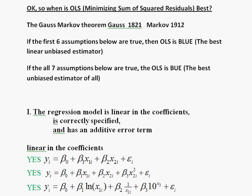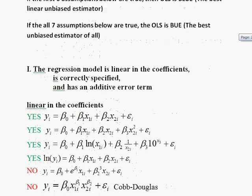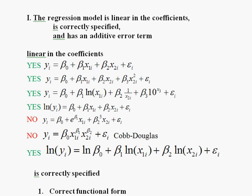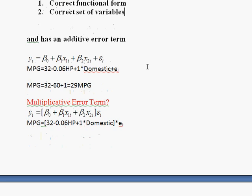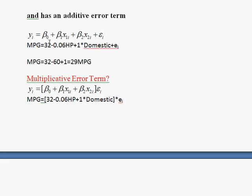Welcome back to our discussion of the Gauss-Markov theorem, when we're trying to figure out when ordinary least squares is the best. We just got done talking about the first assumption of the classical linear regression model: that the regression is linear in the coefficients, is correctly specified, and has an additive error term. We discussed what linear in the coefficients means, that correctly specified says we have the right functional form and the correct set of variables, and that an additive error term means you use the y-intercept and the slopes to come up with a predicted value for an individual — for example, 29 miles per gallon for a particular car with certain characteristics — and then that's not the actual value.